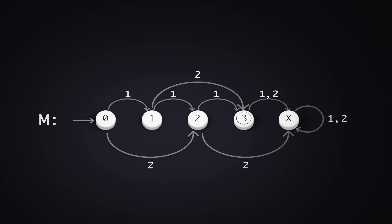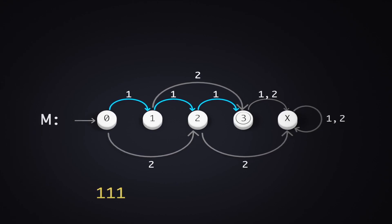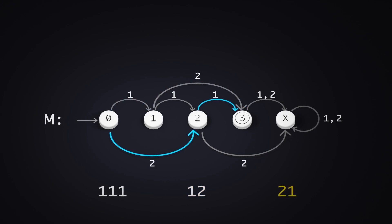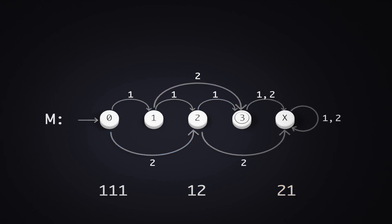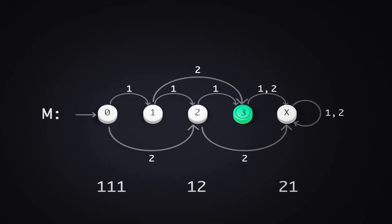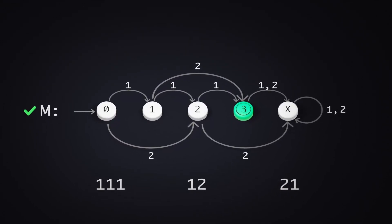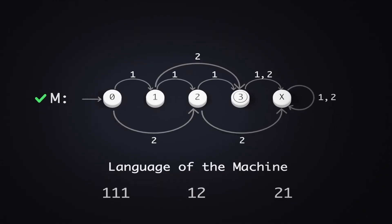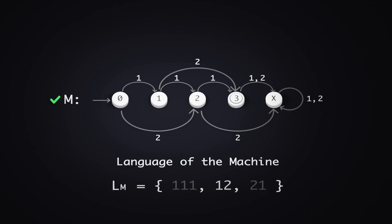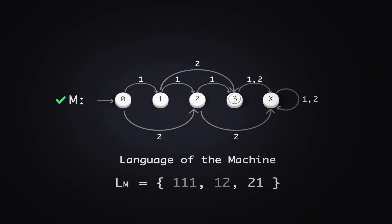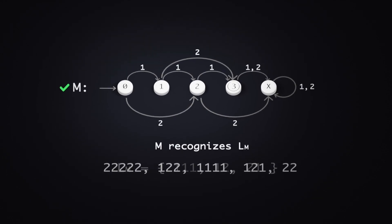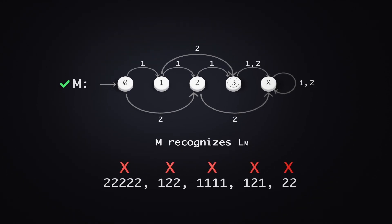Either through 3 $1 notes, through 1 $1 note followed by a $2 note, or a $2 note followed by a $1 note. These paths that lead us from the start state to the accept state are all accepted by M. We say that the language of the machine is the set of strings 111, 12, and 21. This machine M recognizes LM, and all other strings are deemed not accepted by this machine.